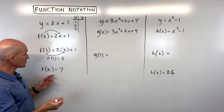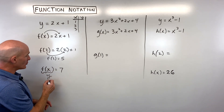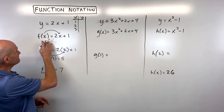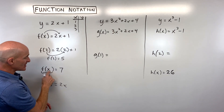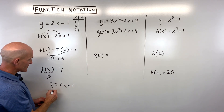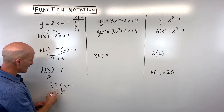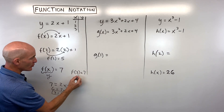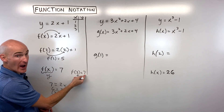Now this one: f of x is equal to 7. This is really telling us that our y value, or our output, is equal to 7. So we go to our function and say this f of x — this y value — is 7, and we're going to solve for the input, this x value. We subtract 1 from both sides — that's 6 — then divide both sides by 2, and x is equal to 3. So f of 3 is equal to 7: three is the input, seven is the output.